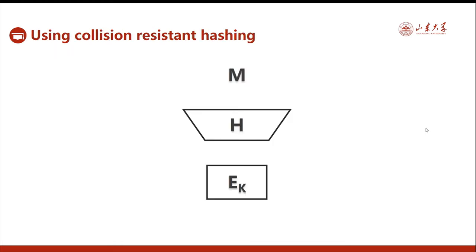Message Authentication can be done using collision-resistant hashing and a block cipher. We use the block cipher to encrypt the hash digest of the message. Since the hash is collision-resistant, it is difficult to find two different messages with the same hash input, making it hard to forge. This is the core idea.